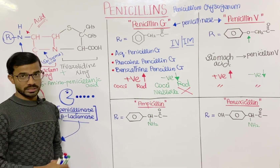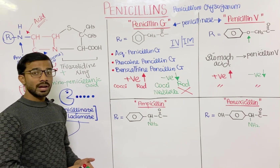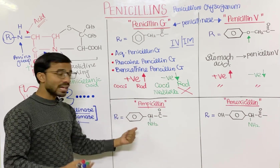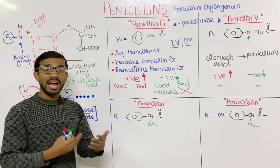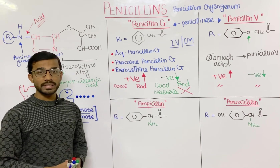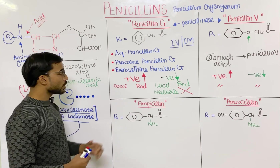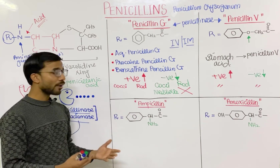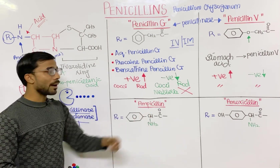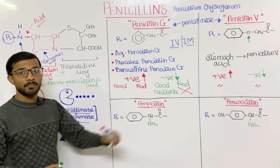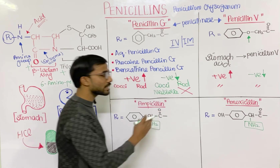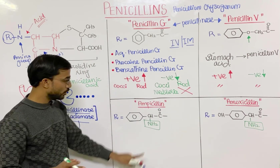Next, we will see ampicillin and amoxicillin. With the passage of time, we had to change the natural forms into synthetic forms. We synthesized ampicillin and amoxicillin because penicillin G is destroyed by stomach acid, so we needed to make more successful forms. In both ampicillin and amoxicillin, you will see the presence of an amino group — NH2. These are called aminopenicillins due to the presence of the amino group.